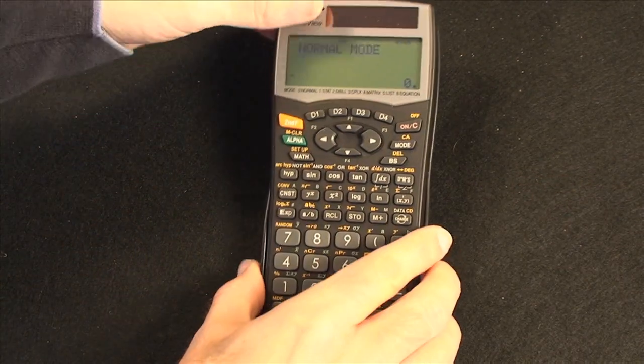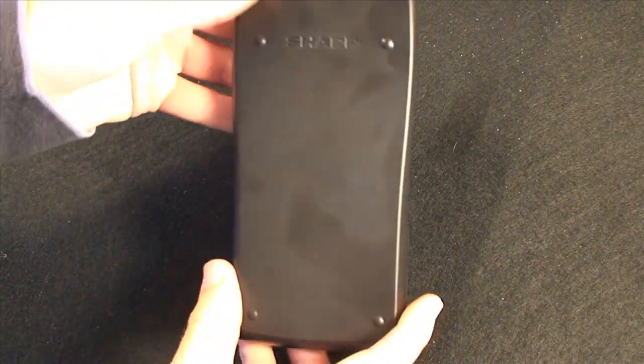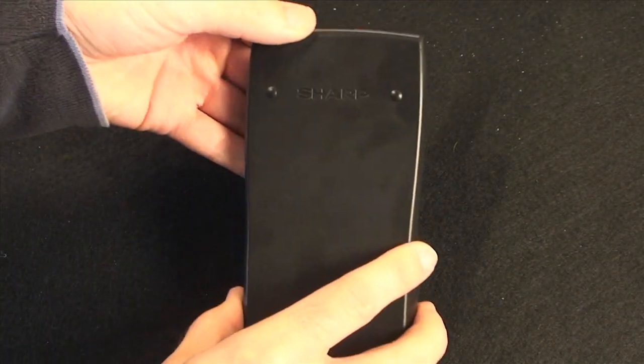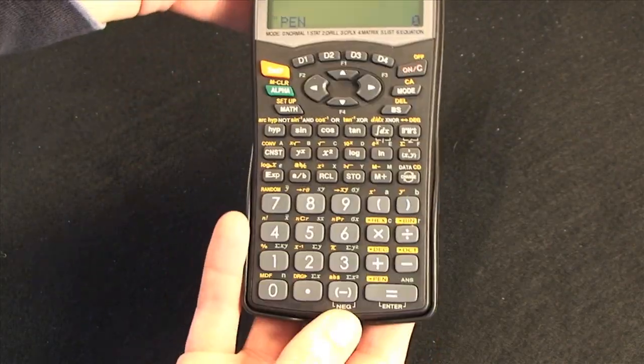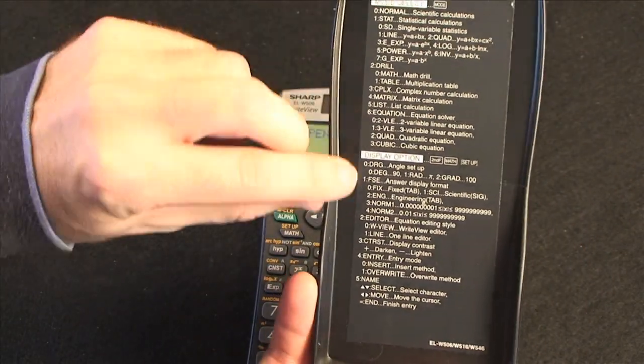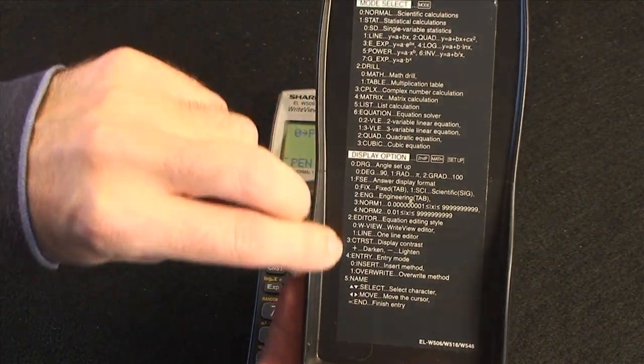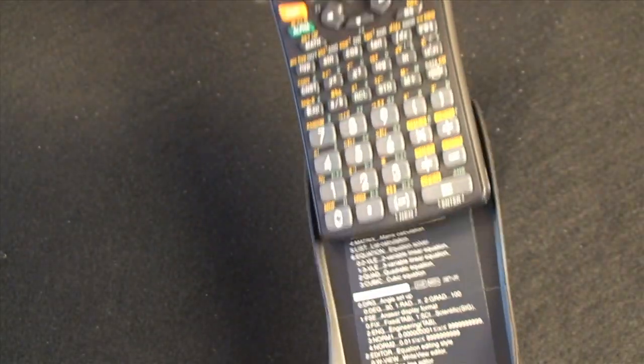Before I show you the display, it's worth noting that the case does clip on to keep the whole unit protected, and when you're using the calculator you simply pop it back onto the back of the unit. This front cover also has some of the various modes that you can select and various display options, which is very handy.